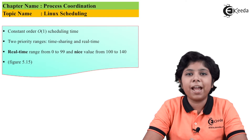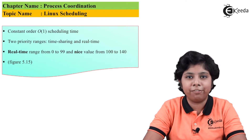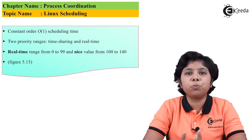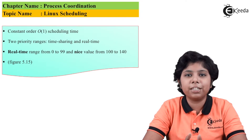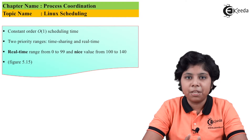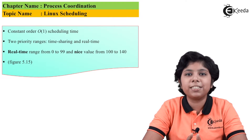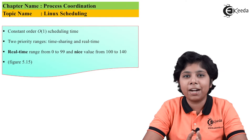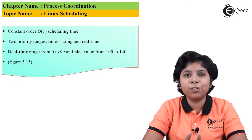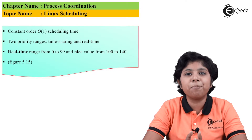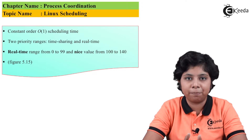Linux has a very interesting scheduling algorithm history. Versions prior to 2.5 used traditional Unix scheduling algorithm policies. However, this policy did not provide adequate support for SMP architecture and it also led to poor performance for a larger number of processes in a multiprocessor or symmetric multiprocessing system.